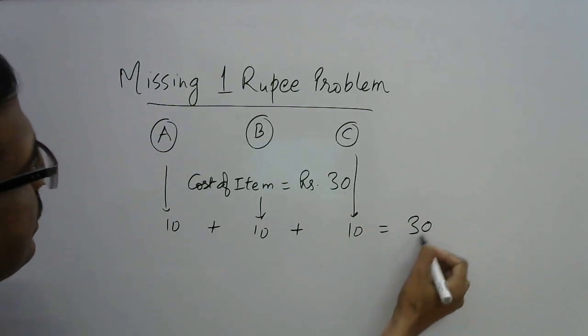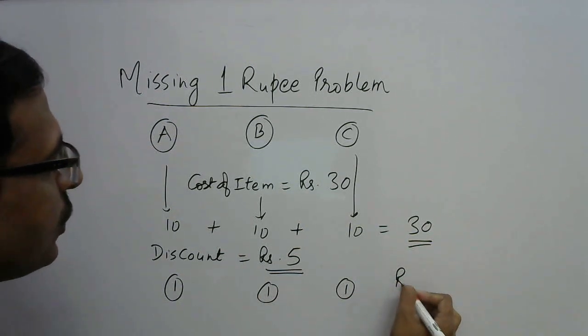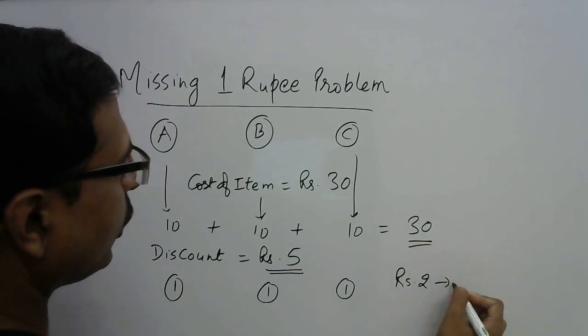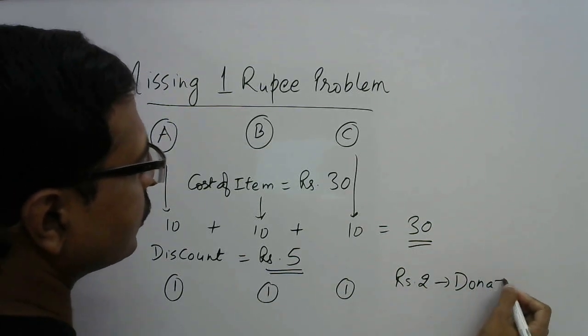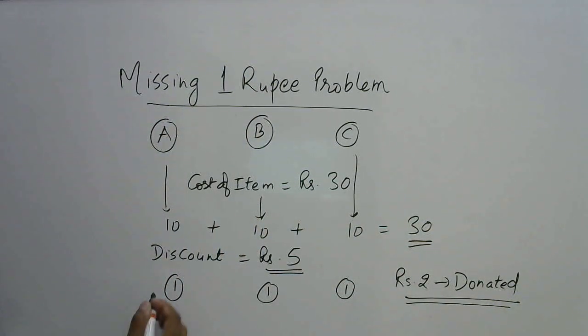Now what happened? The shopkeeper gave a discount of rupees 5 to them, so this rupees 5 is returned to them. So what did they do? They share 1 rupee each, so the remaining 2 rupees they donated. So they donated rupees 2 to someone and they took back 1 rupee each.